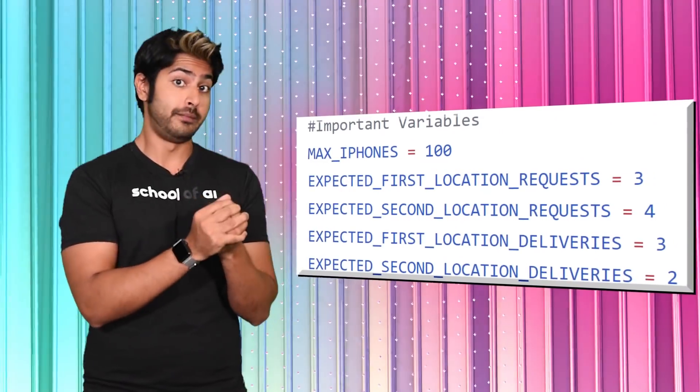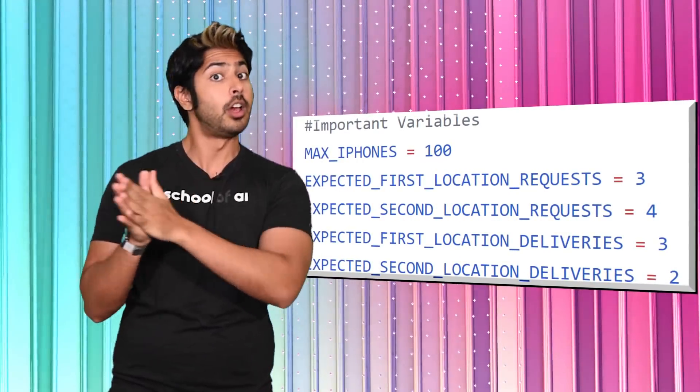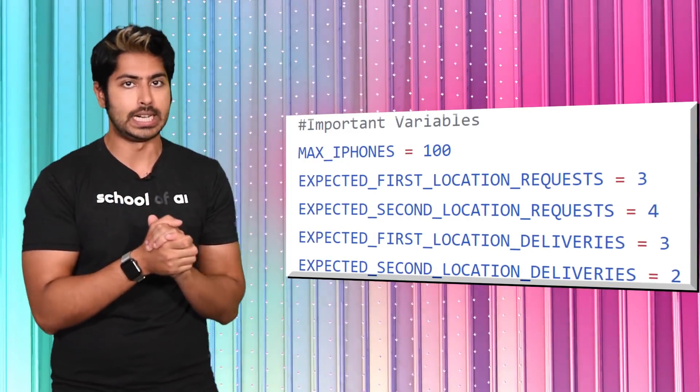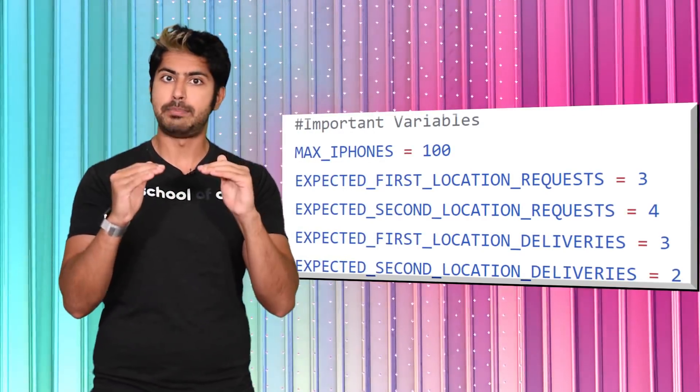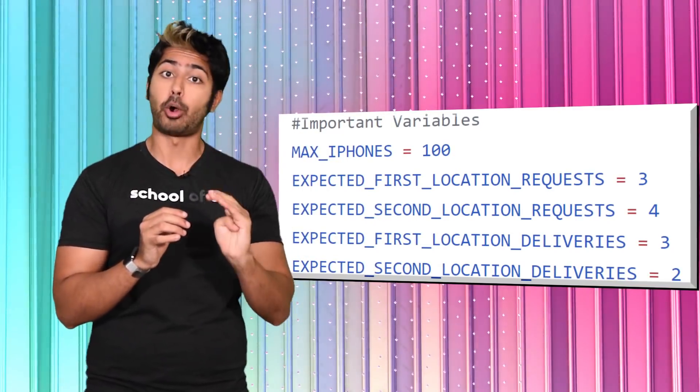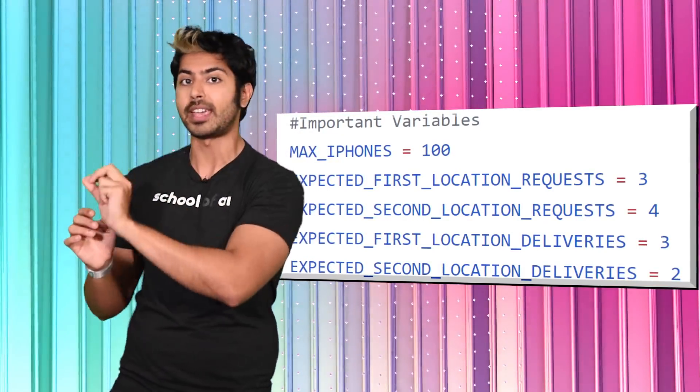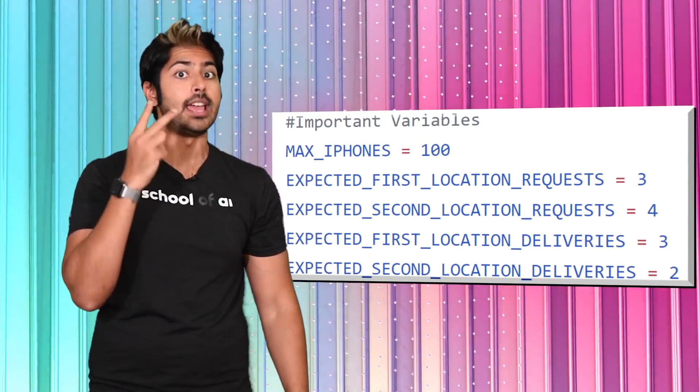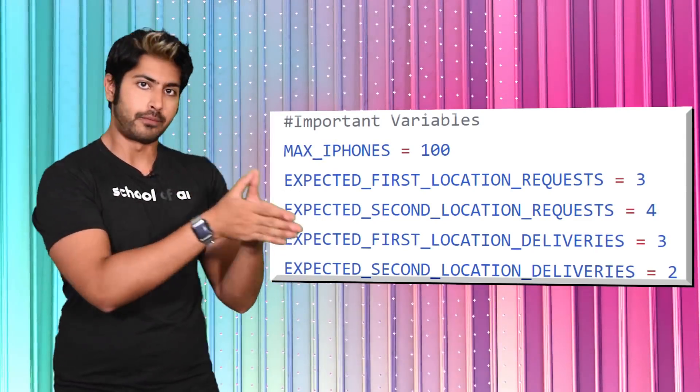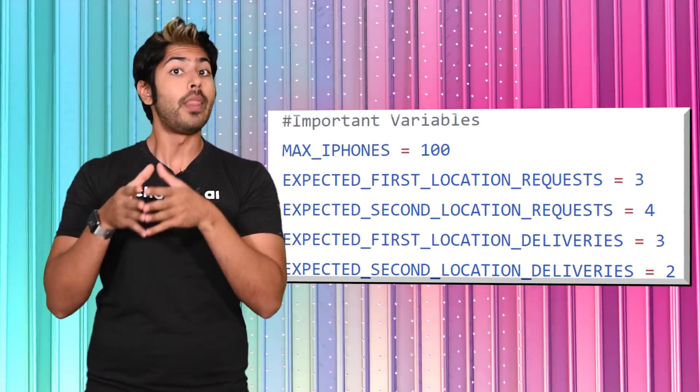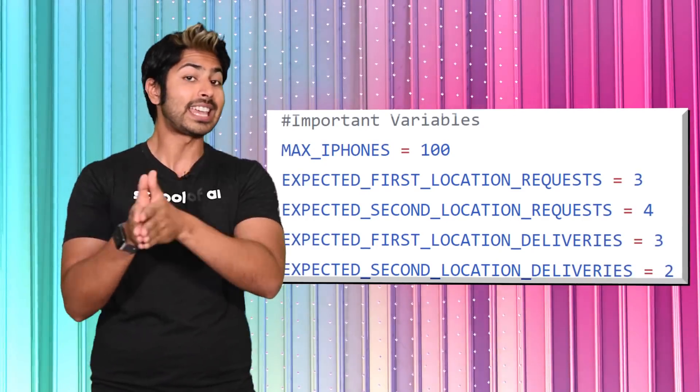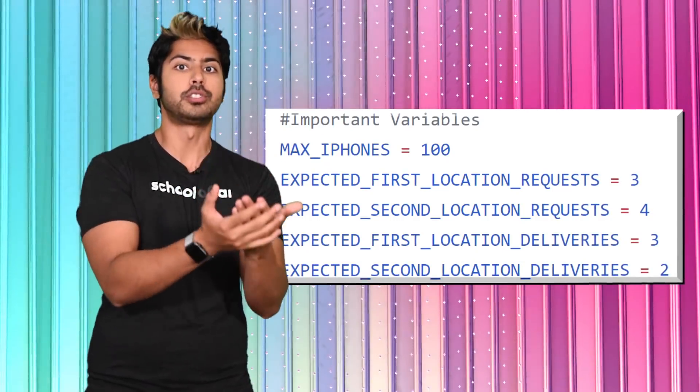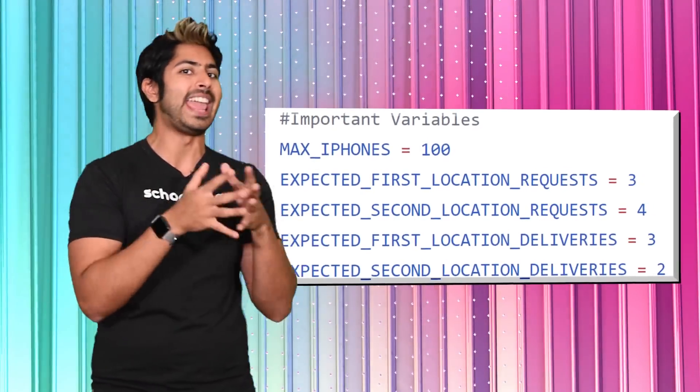So that's it for our Markovian variables, but we should define the rest. Let's say each retail store can only hold 100 iPhones at a time because we're feeling exclusive. We can expect an average of three and four iPhone purchases at the first and second locations respectively. And we can expect an average of three and two new iPhone deliveries at the first and second locations respectively. What that tells us is that the second location will have more purchases than deliveries, whereas the first location will have an equal number of purchases and deliveries.